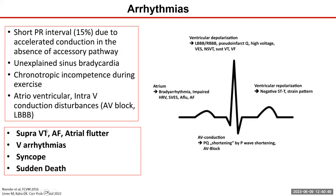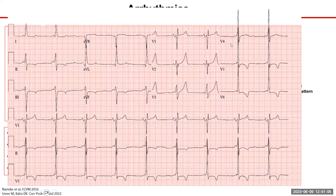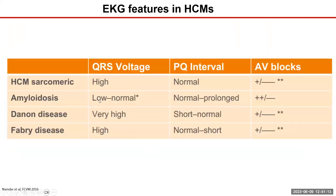A typical EKG shows very high QRS voltages, short PR intervals, and T-wave inversion. We're taught that amyloidosis has low QRS voltage, but remember you cannot exclude amyloid if the QRS voltage is normal. Danon disease has the highest QRS voltage, even more than HCM. The PQ interval is short in Fabry disease, and the highest incidence of AV blocks occurs in amyloidosis, though Fabry disease is also quite common for AV block.